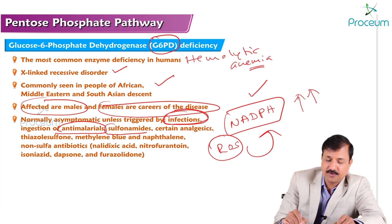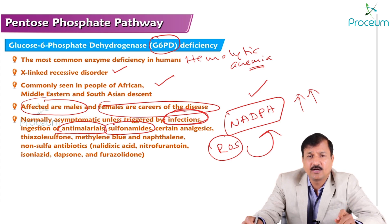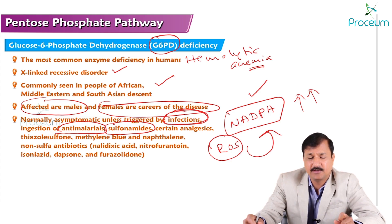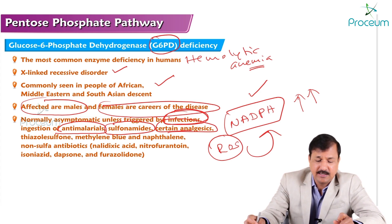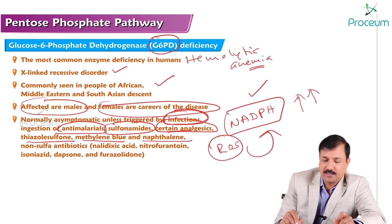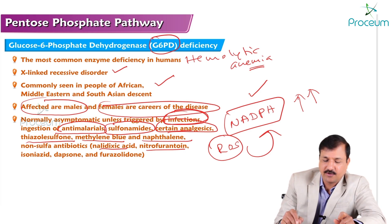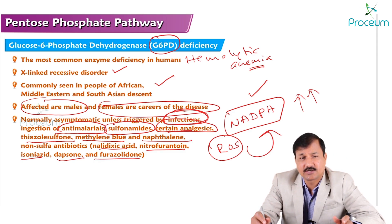Sulfonamides like sulfamethoxazole will also trigger the disease. Certain analgesics like aspirin, thiazosulfone, methylene blue, naphthalene, and non-sulfo antibiotics like nalidixic acid, nitrofurantoin, isoniazid, dapsone, and furazolidone — all these drugs can trigger the condition.